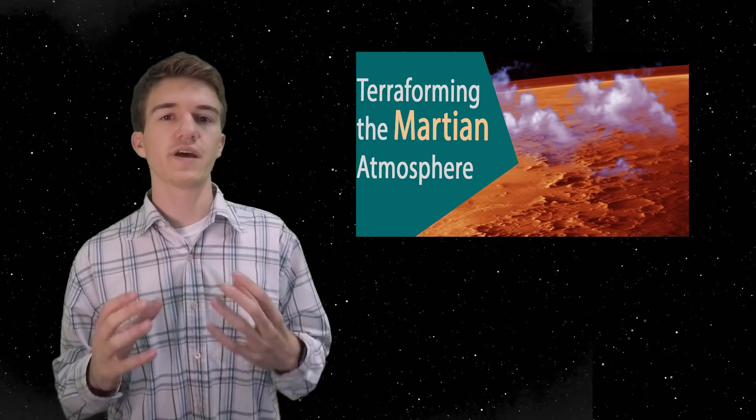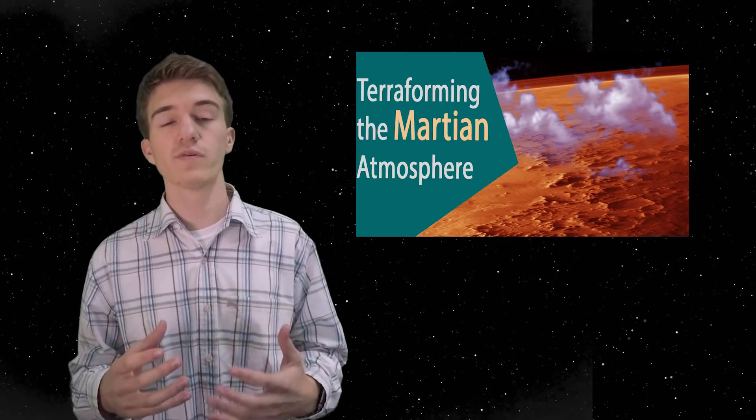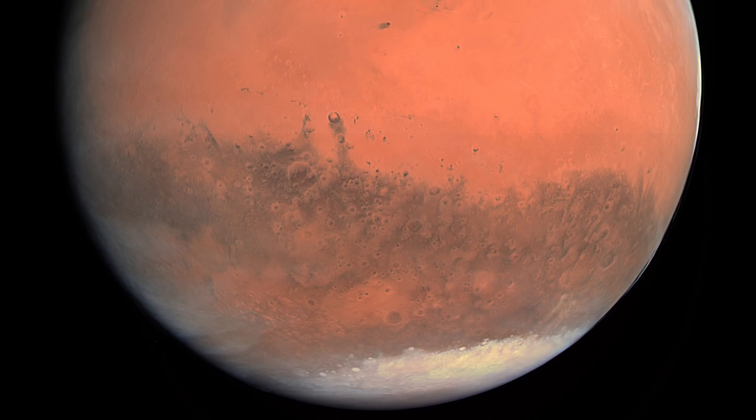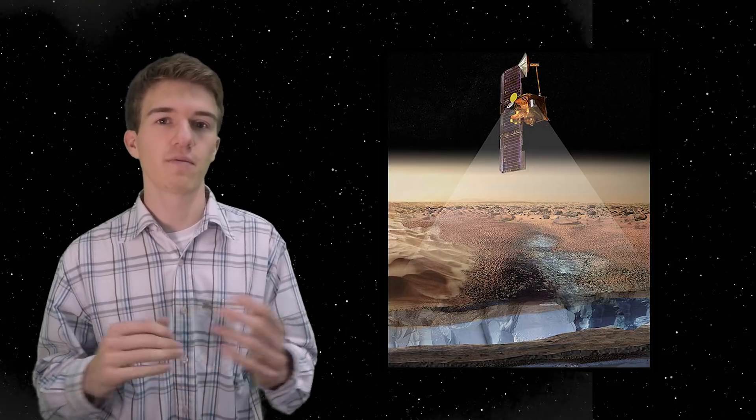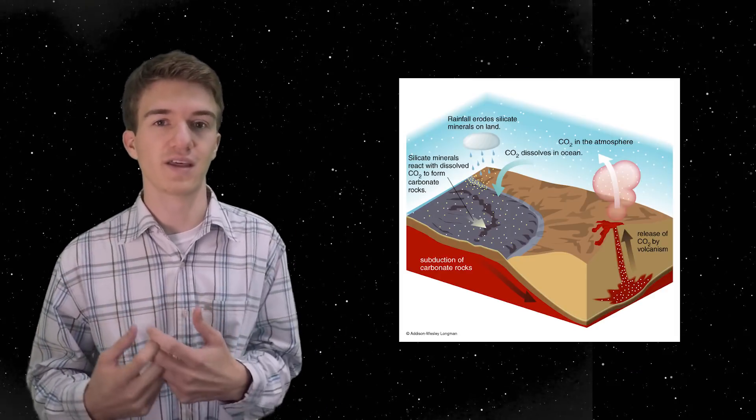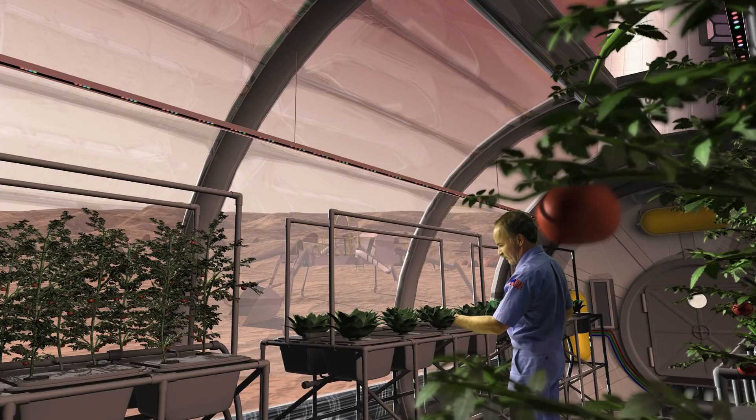To begin, as we mentioned in the last episode, in order to terraform Mars in a way that humans could survive on the surface without needing a mask or a suit, you would have to drastically increase the pressure that the atmosphere has at the surface. One major way of doing this would be melting the ice caps or the ice underneath the surface to release that carbon dioxide into the atmosphere to raise the pressure. How do we exactly do that? Using something called the greenhouse effect.